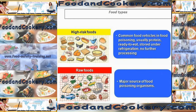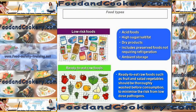Let's have a look at the different types of food. First of all, high risk food — this is the major source of nutrients for food poisoning bacteria. They are common factors in food poisoning, usually protein, ready to eat, stored under refrigeration, and no further processing is required, so you can eat them as they are. Raw foods are a major source of food poisoning organisms. Other food types include low risk foods and ready-to-eat raw foods.